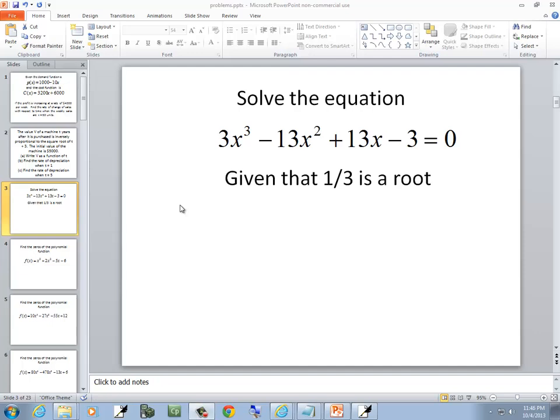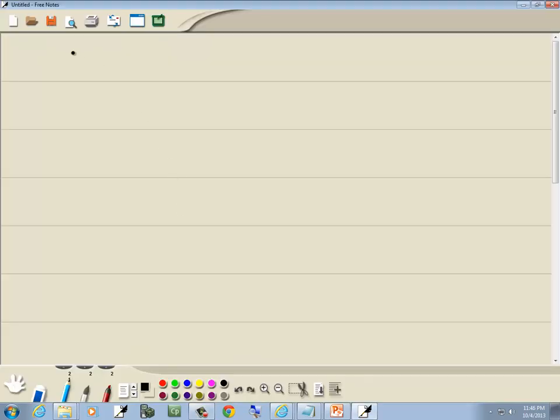In this problem, we want to solve this equation. We've got 3x to the third minus 13x squared plus 13x minus 3 is equal to 0. They tell us 1/3 is a root.